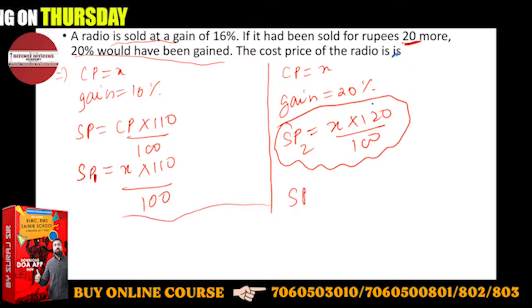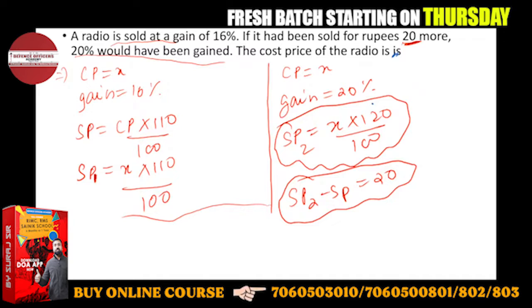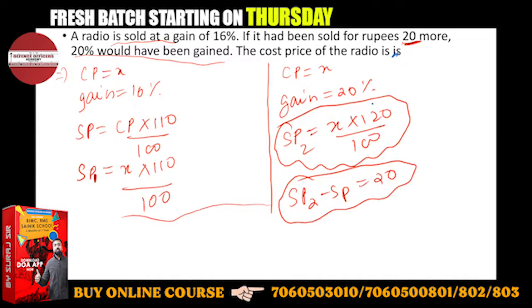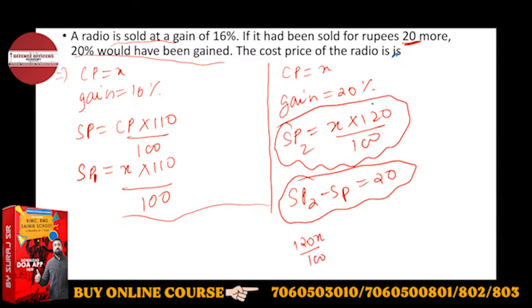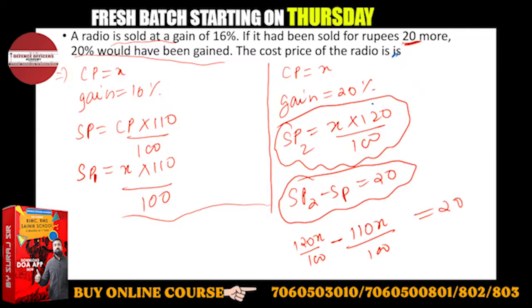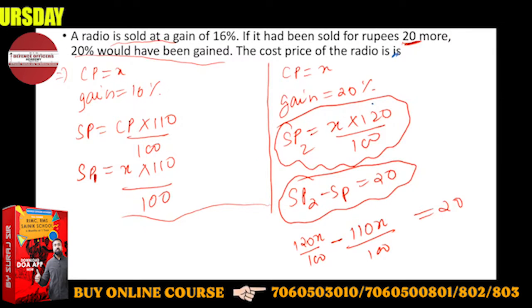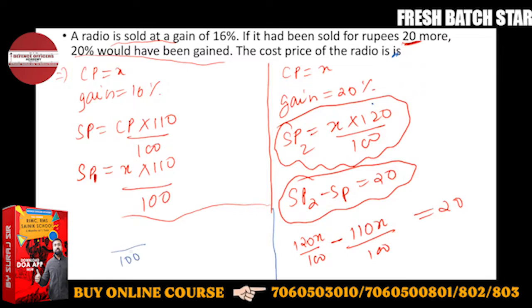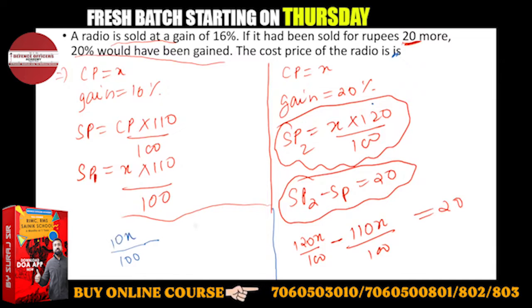So SP2 minus SP1, the difference will be 20. So this will be 120X upon 100 minus 110X upon 100 equals 20. The LCM will be 100. So 120X minus 110X is equal to 20.